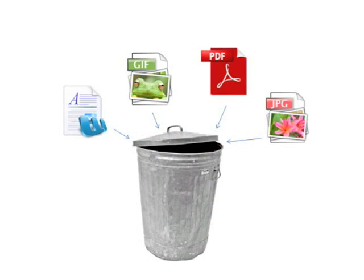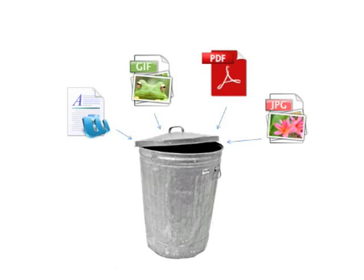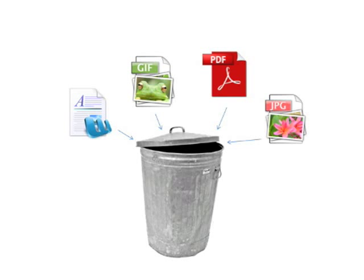To understand what happens when a file is deleted, you have to understand how data is divided from an eDiscovery perspective. For the purposes of computer forensics, the allocated space of a drive is divided into two categories. Used or active space contains active files — those files that have been stored on the drive by the action of the operating system or user and which are recognized by the FAT as active files. Active files are available to the user without the use of any recovery utilities or special viewers.